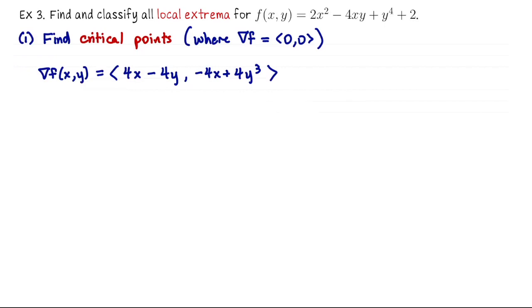Differentiate with respect to y, negative 4x plus 4y³. That's a lot of fours, so let me factor that out. That's just a scalar out front of the vector. And we'll have x minus y. And for the second coordinate, I'll write y³ minus x. We are looking for values of x and y together that make both coordinates simultaneously zero.